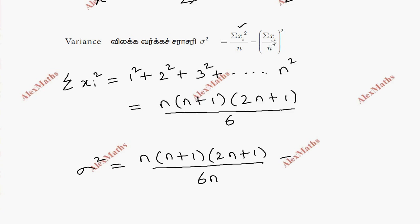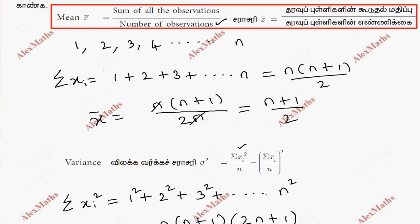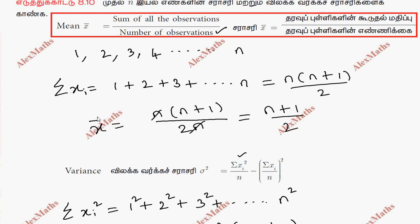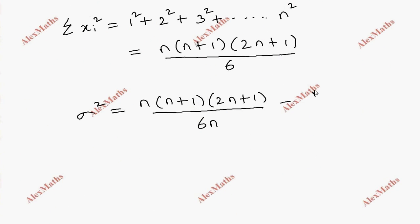Minus sigma xi by n. The x bar is sigma xi by n, so this is n plus 1 by 2 whole square. The n and n cancel.